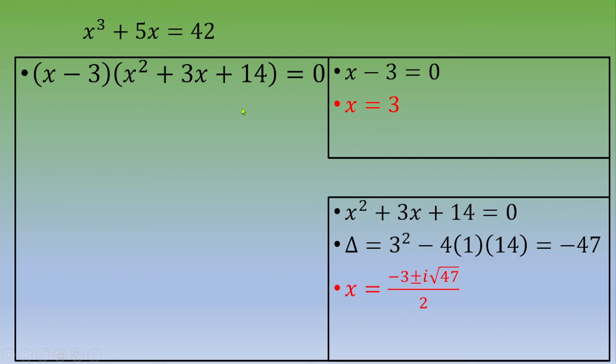So this is our three roots. First one, x equals 3 is a real root. And you've got two complex roots: minus 3 plus or minus i square root of 47 over 2.